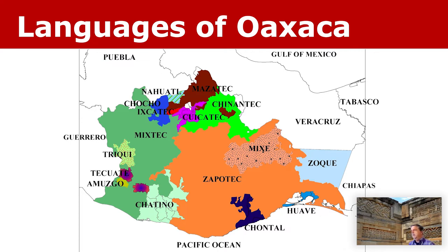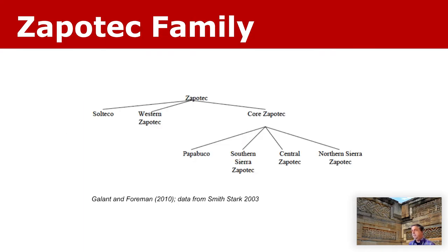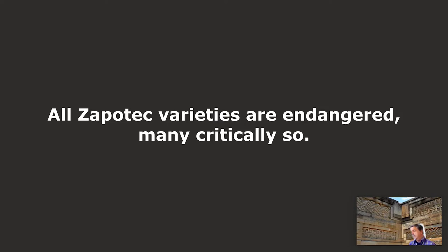One important thing to know is that Zapotec is actually a family of languages with perhaps 50 different varieties. Altogether, there are 400,000 to 450,000 speakers of all these different Zapotec varieties. All across the state, communities are shifting to Spanish in more and more contexts, and so all Zapotec varieties are endangered.